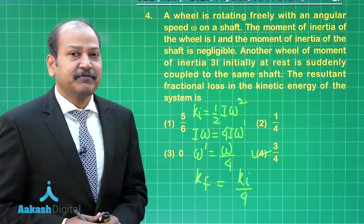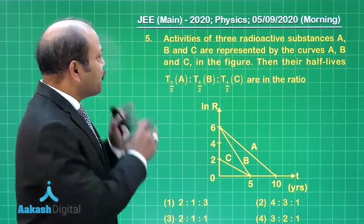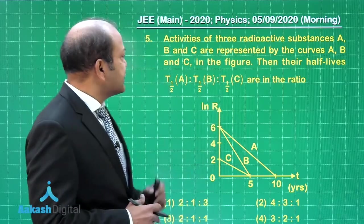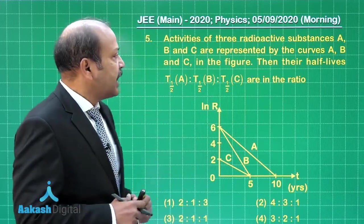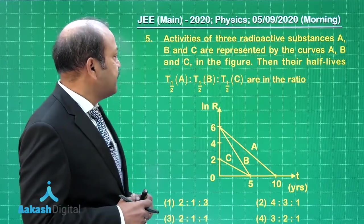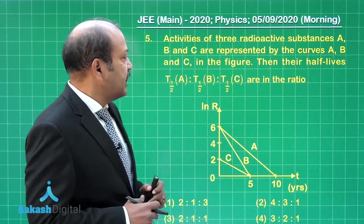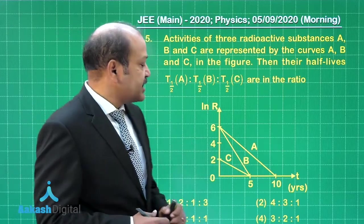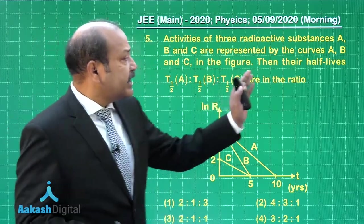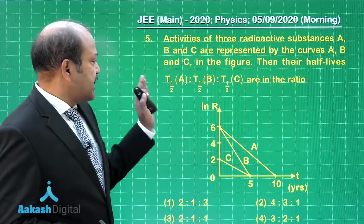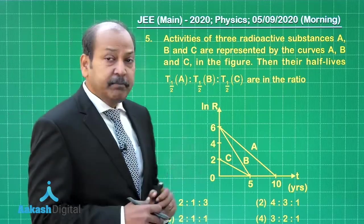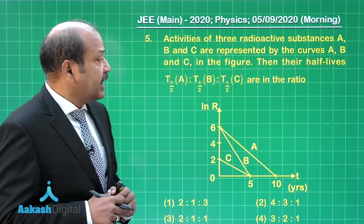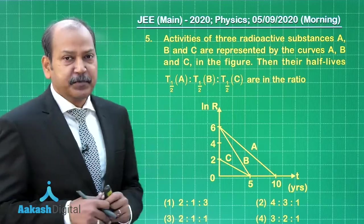Let us now go to question number 5. Question 5 says activities of three radioactive substances A, B, and C are represented by the curves A, B, and C in the figure. We have curves between ln R and time in years. Then their half-lives T_half of A to T_half of B to T_half of C are in the ratio, and the four options are given.